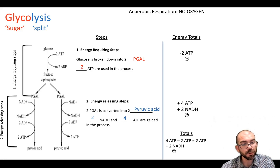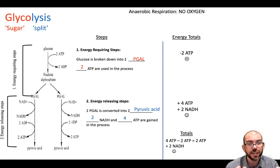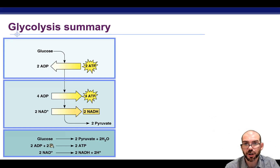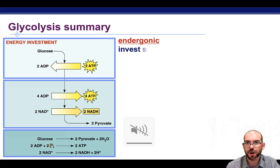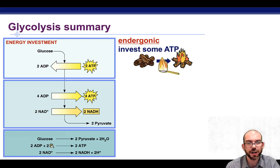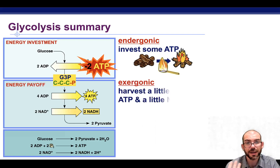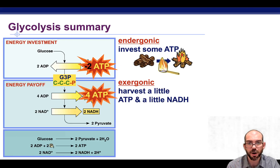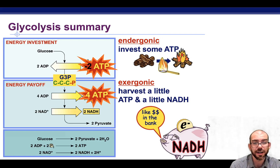Totaling this together, we gained four ATP but we spent two, so we have a net gain of two ATP and a net gain of two NADH. We've made a little energy and harvested that from sugar. The first step is endergonic — we're spending a little energy — but the reason for that is we get a big exergonic payoff: we're able to harvest even more ATP and a little bit of NADH, some money in the bank to use later on in other steps.